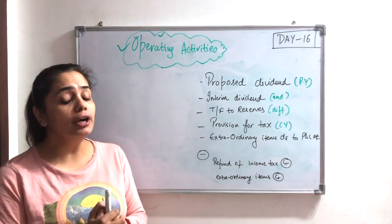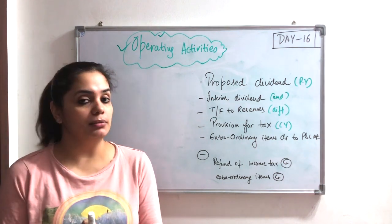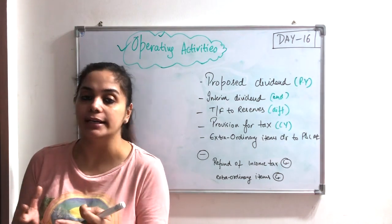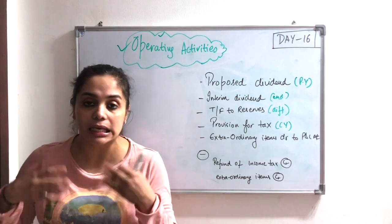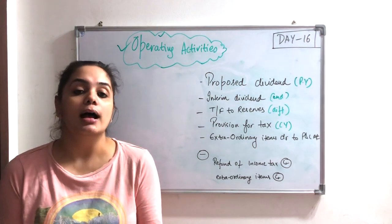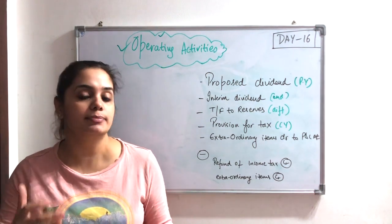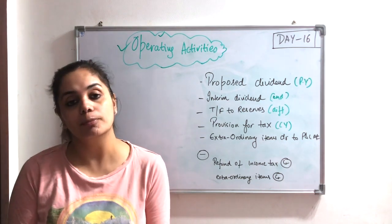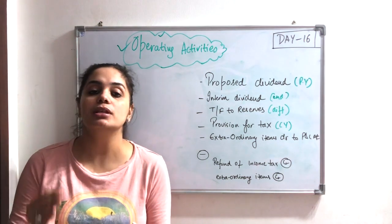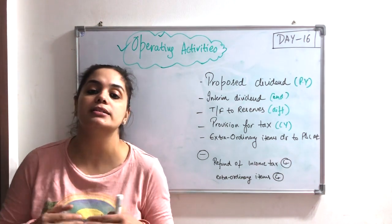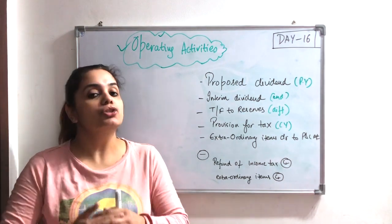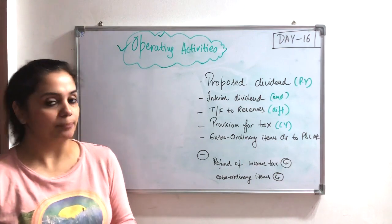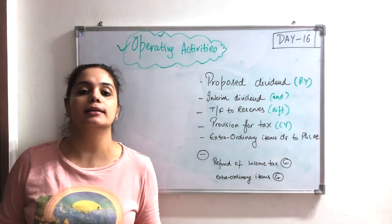In our operating activities, the first step is to know our net profit before tax and extraordinary items. Extraordinary items means those items which are unwanted, unexpected - which we have not expected. For example, COVID-19 is an extraordinary expense. I did not know it was going to come, and that is why my company had many losses. These losses and expenses are basically extraordinary losses - that is what we call extraordinary.